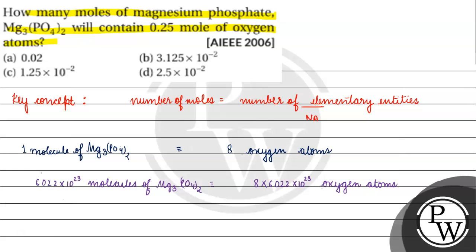Basically, 1 mole of magnesium phosphate contains 8 moles of oxygen atoms.